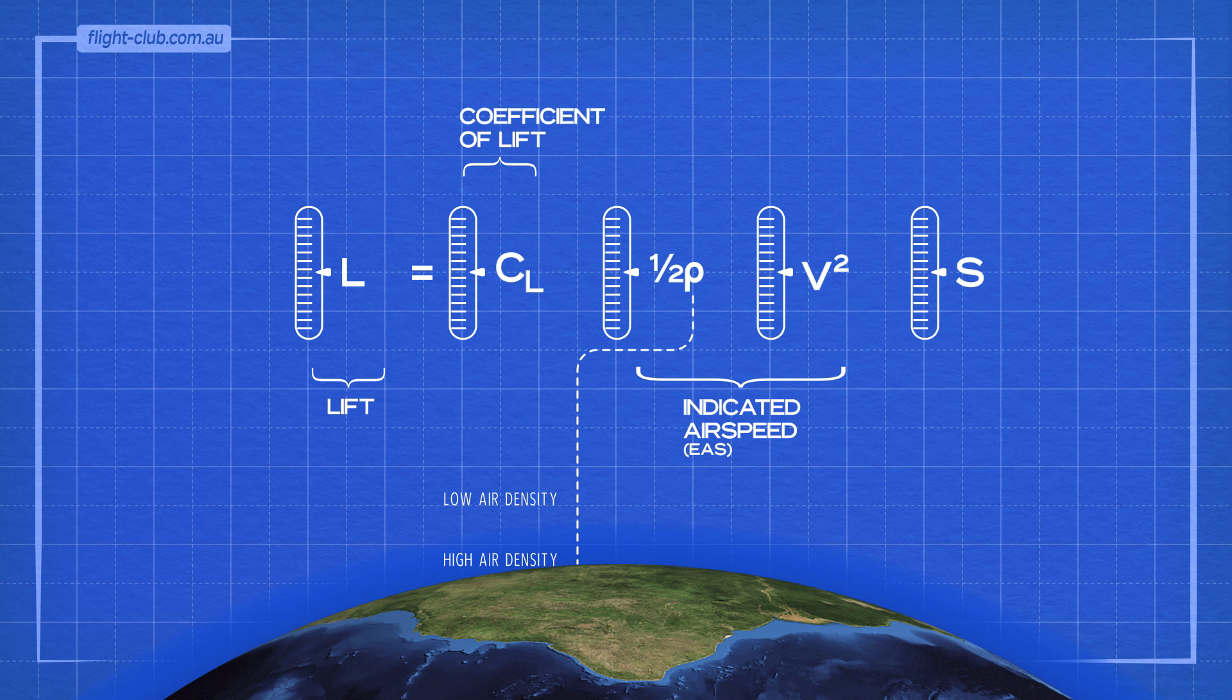Rho stands for air density. V stands for velocity, and this represents the true airspeed. Unlike indicated airspeed, true airspeed is the actual speed the aeroplane flies through the air. S is the surface area of the wing.